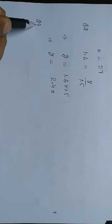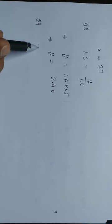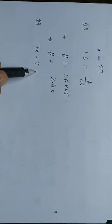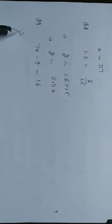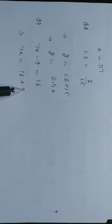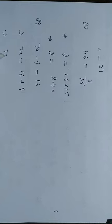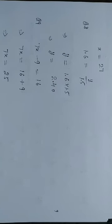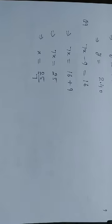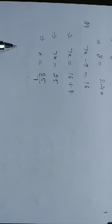Question number 9: 7x minus 9 is equal to 16. Transposing minus 9 to the right hand side, it becomes plus 9. So that implies 7x is equal to 16 plus 9, which is 25. Therefore x is equal to 25 upon 7. This is the answer.